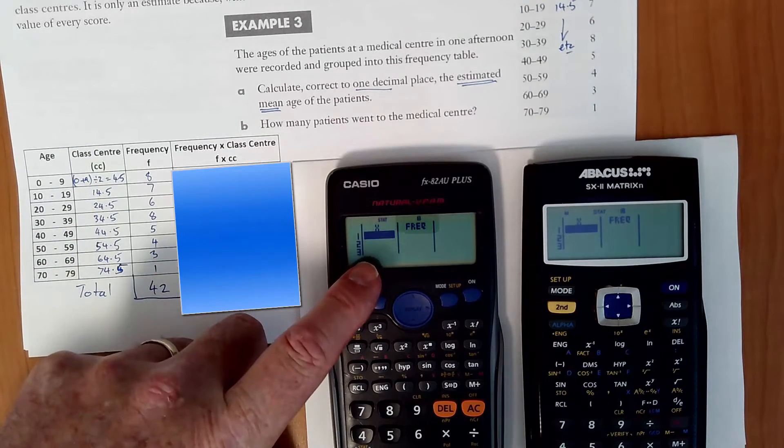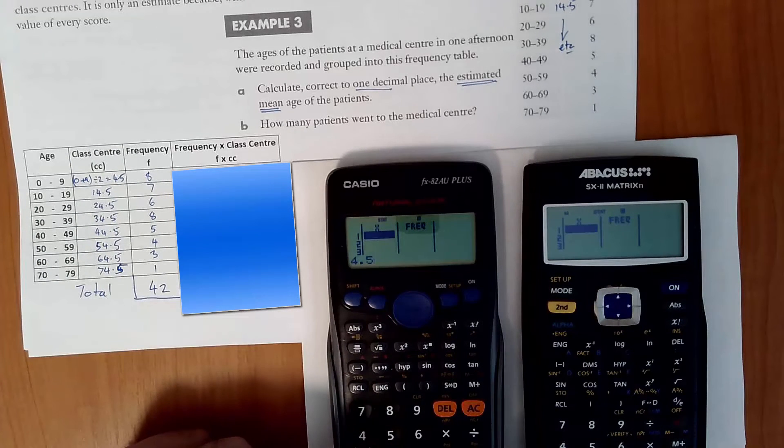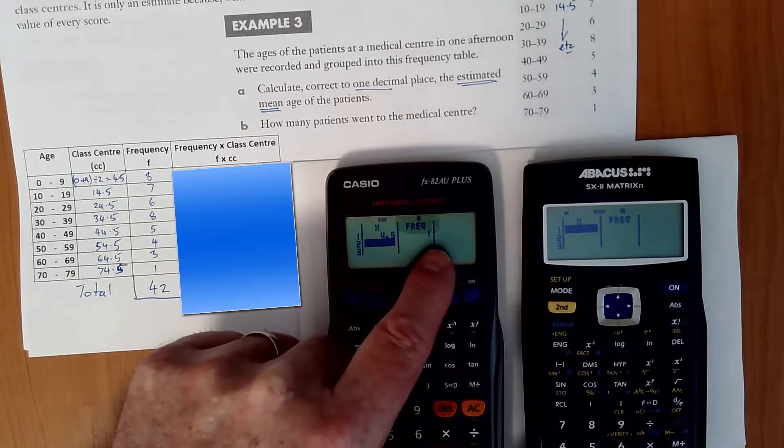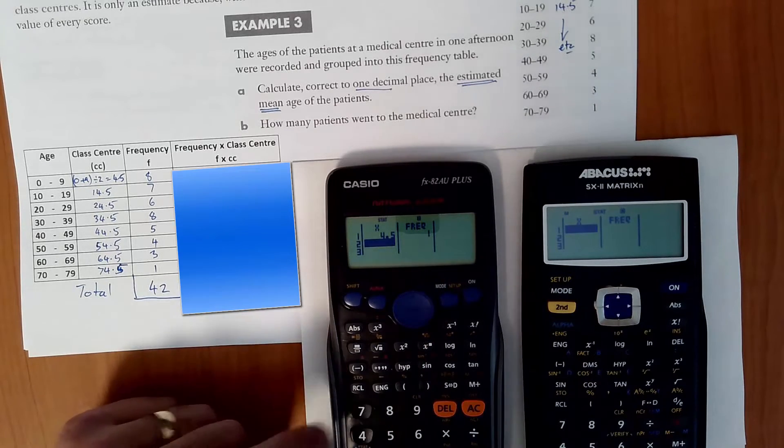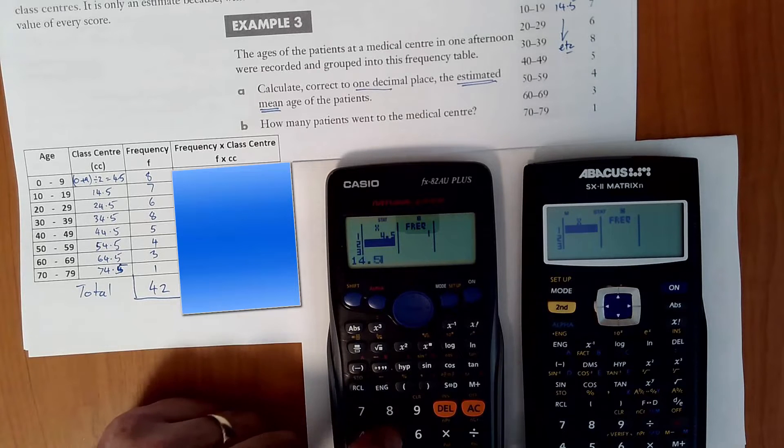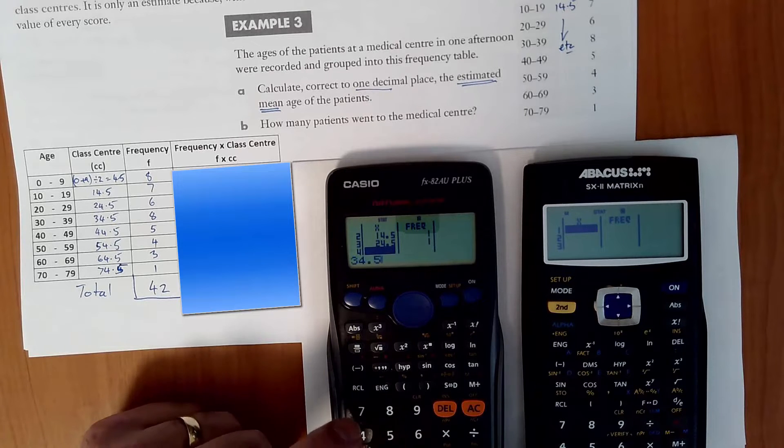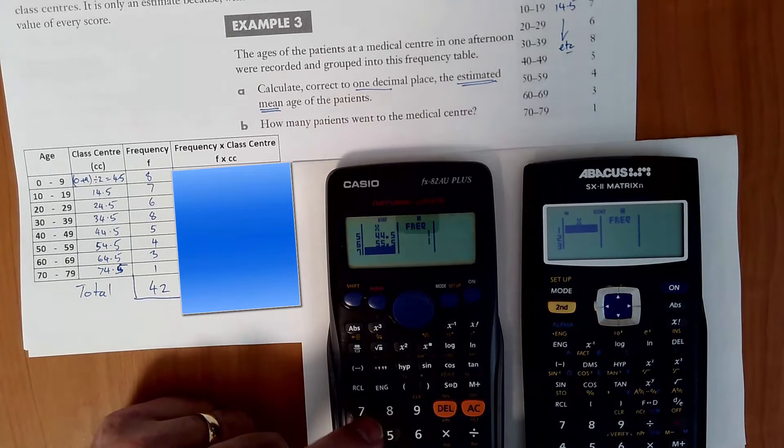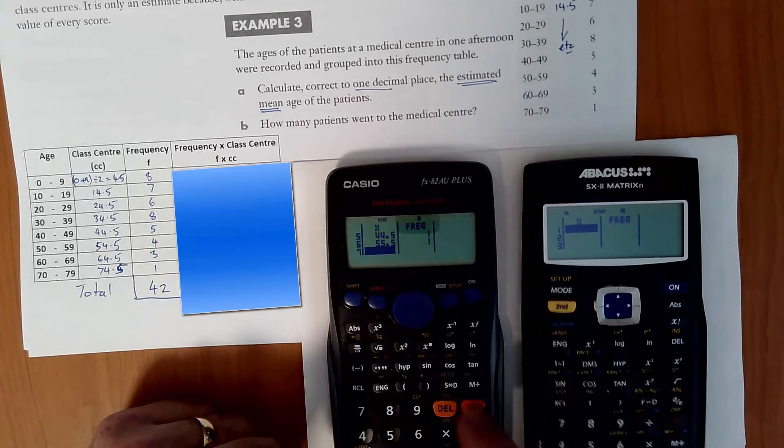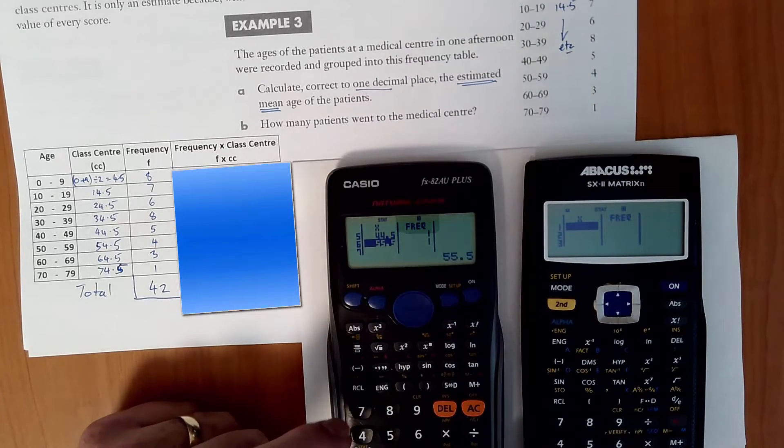So then what we do in the x column, which is the data value, we're using the class center. So we'll go down and we'll go 4.5, press equals to enter it. Notice the default frequency comes up at 1. We'll go back and change that later on. So 14.5, 24.5, 34.5, 44.5, 55.5, 64.5, hang on. I made an error, so I'll just go back up and go 54.5.